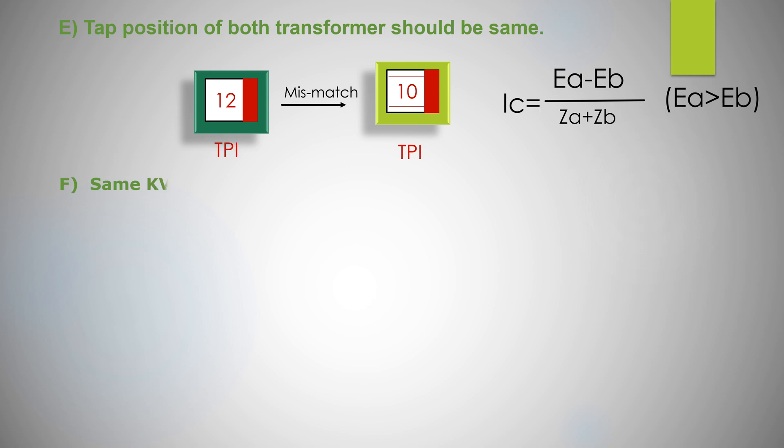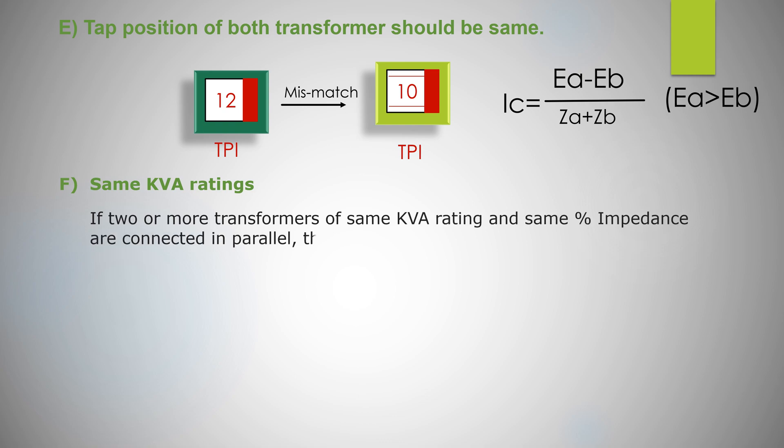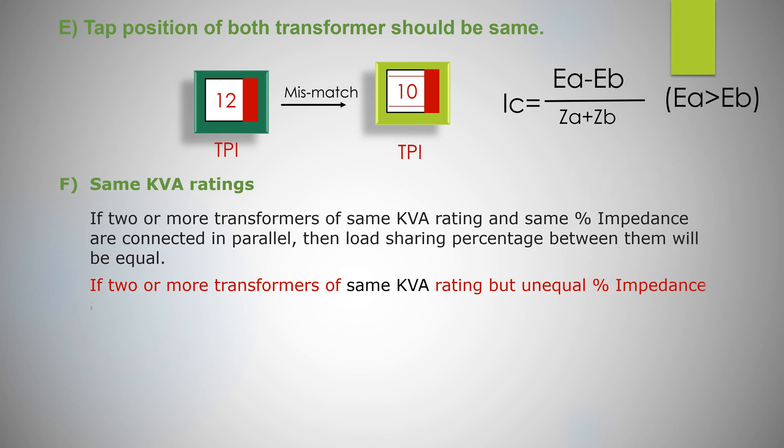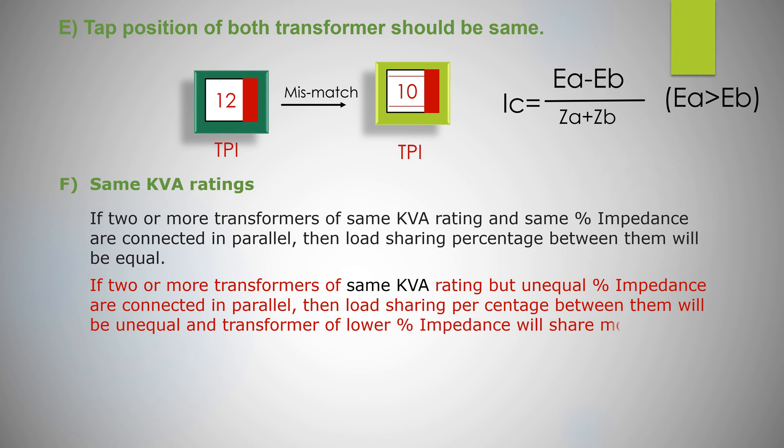KVA rating should be same. If two or more transformers of same KVA rating and same percentage impedances are connected in parallel, then load sharing percentage between them will be equal. If two or more transformers of same KVA rating but unequal percentage impedance are connected in parallel, then load sharing percentage between them will be unequal and transformer of lower percentage impedance will share more load.